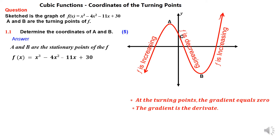That gives us the method we can use to determine the coordinates of the turning point. To determine the coordinates of the turning point, we differentiate the equation of the function and equate the derivative to zero, because the derivative is the gradient, and at the turning point the gradient is equal to zero.